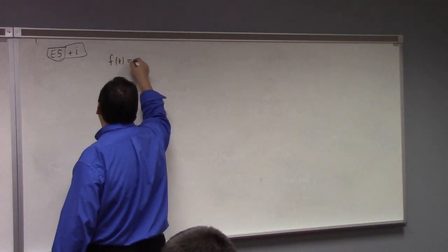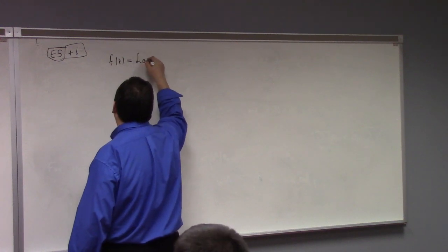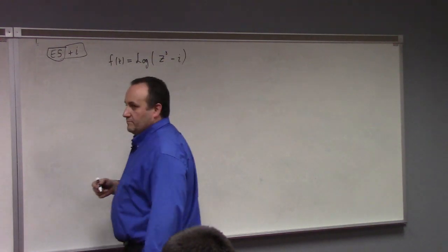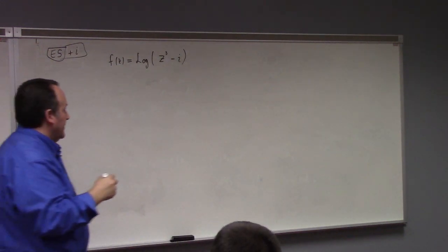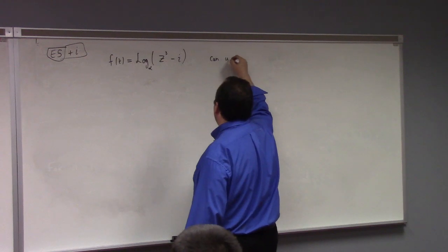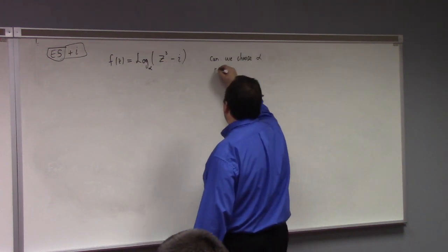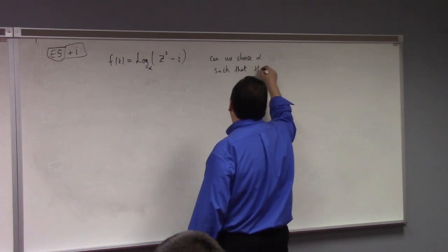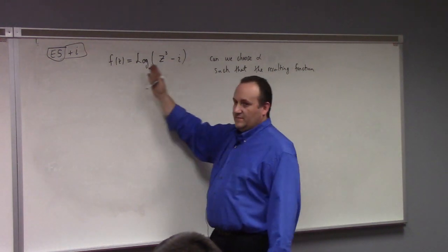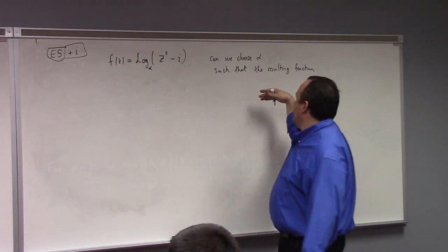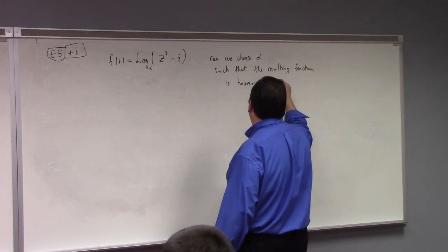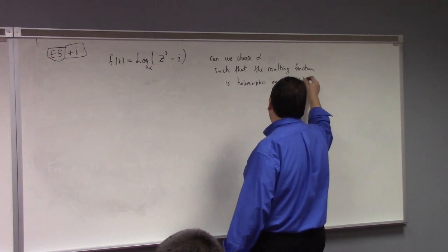I have f of z equals the log of z cubed minus i. Let me say this a little differently. I have the log sub alpha equal to this. And then the question is: can we choose alpha such that the resulting function — which of course is called a branch cut, because it's a selection of the infinity of the multiply-valued log — is holomorphic on the real part of z greater than zero?